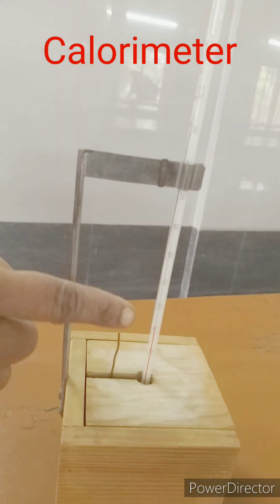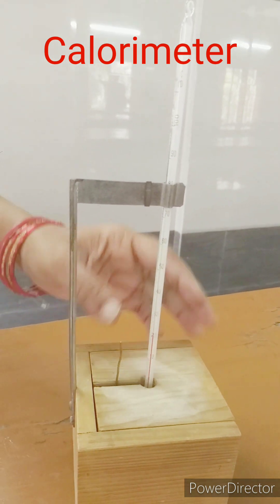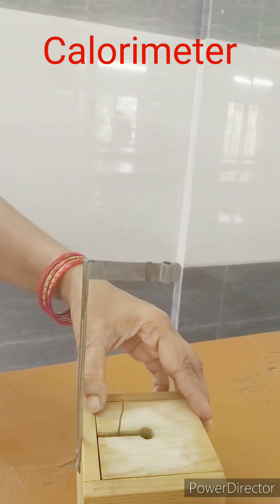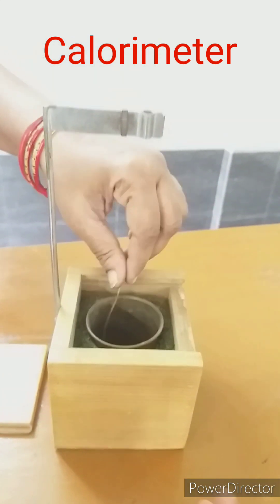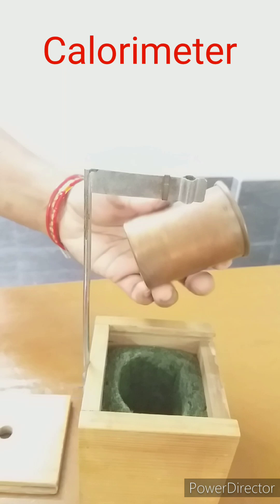The entire arrangement of a calorimeter: a thermometer is used to measure the temperature of hot body, cold body, or the mixture. A stirrer is used as a spoon to mix the contents properly. This is a calorimeter made up of copper, as copper has low specific heat capacity.